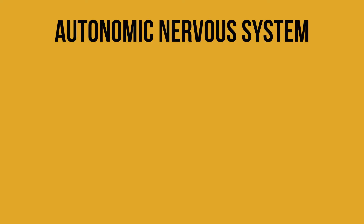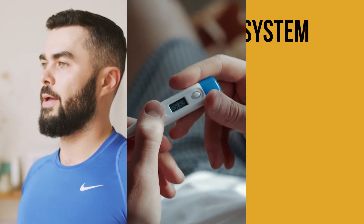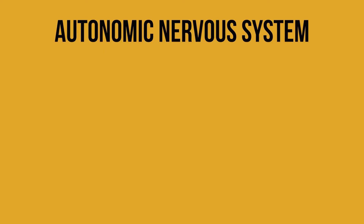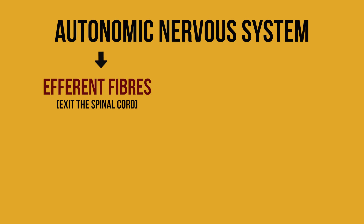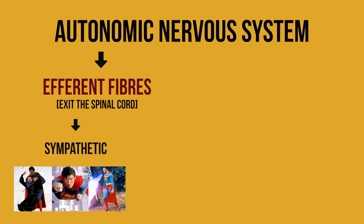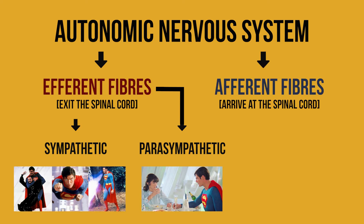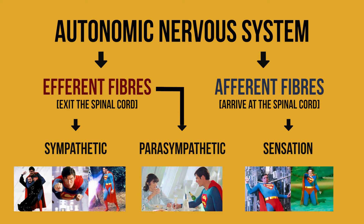The abdominal viscera are primarily innervated by the autonomic nervous system — those peripheral nerves that control the involuntary processes of the body. Much like the somatic system, the autonomic nerves consist of two major groups. Efferent fibres exit the spinal cord, telling our organs what to do. These efferents can be divided into sympathetic nerves that control our fight, flight or freeze responses, and parasympathetic nerves that allow us to rest and digest. Meanwhile, afferent fibres arrive back at the spinal cord, delivering sensory information from the viscera. This sensation tends to be limited, as abdominal pain receptors can only really detect stretching or chemical irritation.